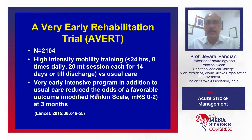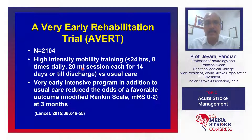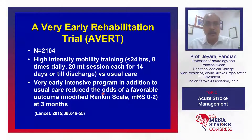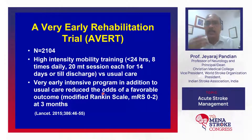Rehabilitation in acute stroke is very important. How early can we start? The AVERT trial randomized patients within 24 hours to very high-intensity mobility training — eight times daily, 20-minute sessions for 14 days — versus usual care. The trial showed that very early, very high-intensity mobility training within 24 hours was harmful and should not be done. The ongoing DOSE trial is investigating what intensity and frequency of mobilization up to 24 hours is appropriate.